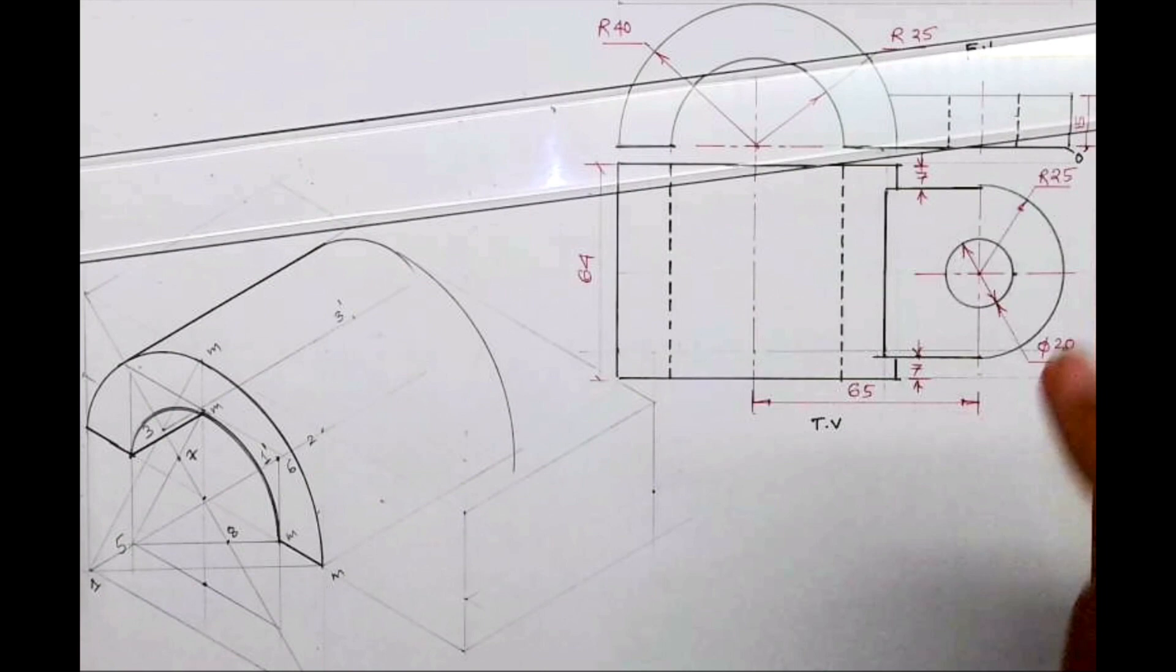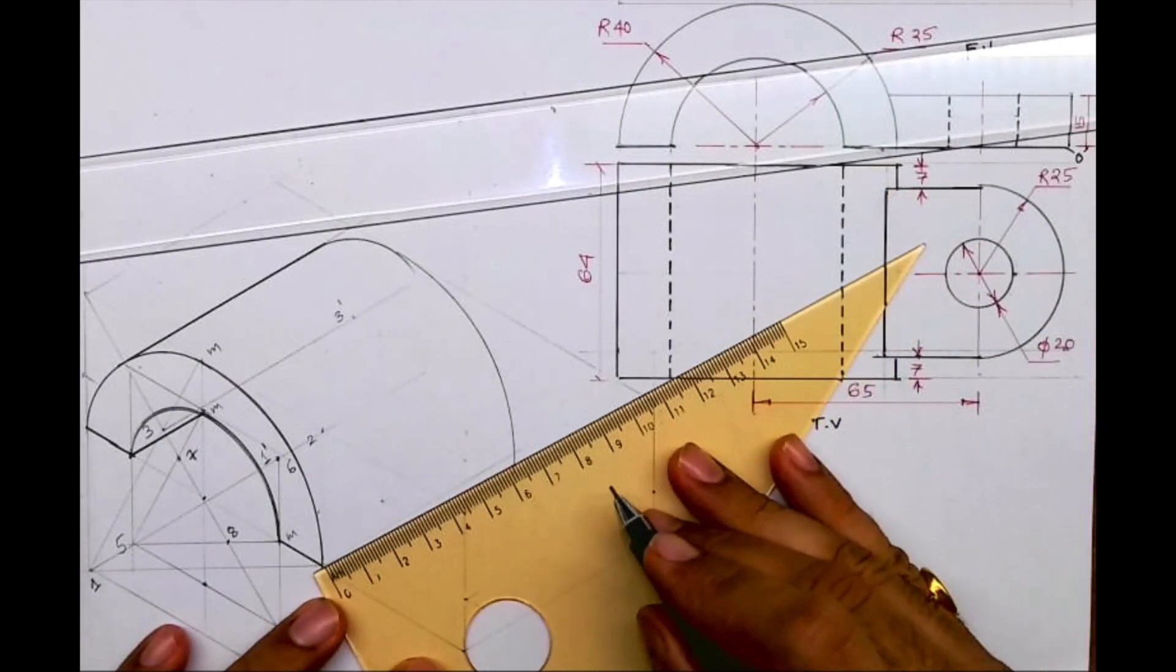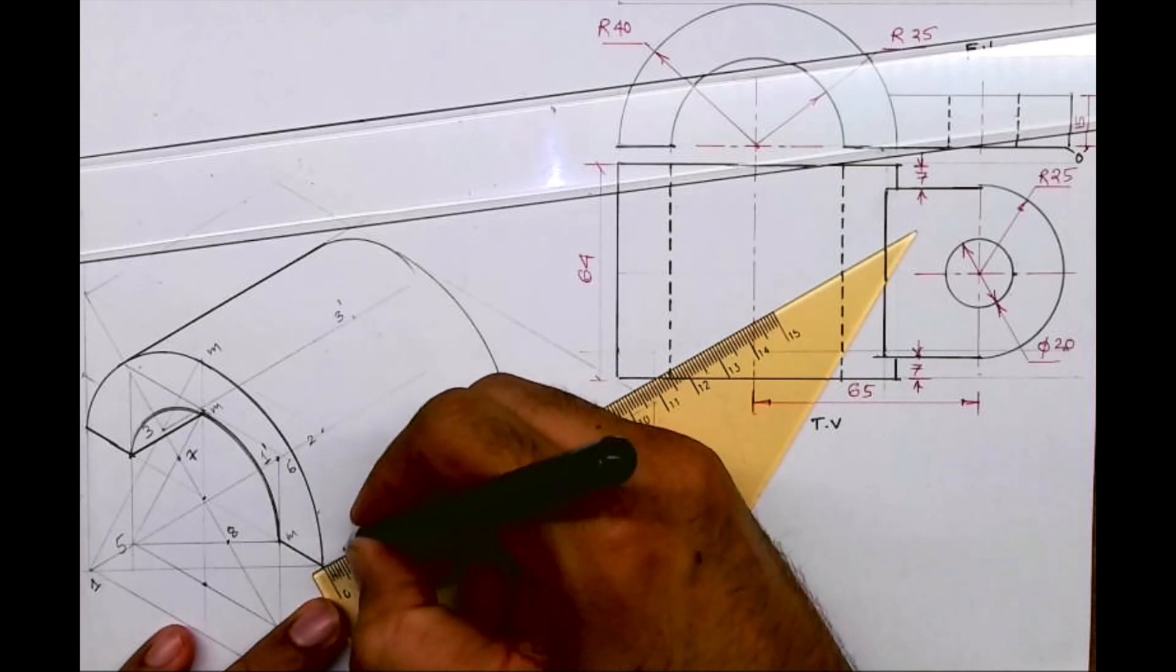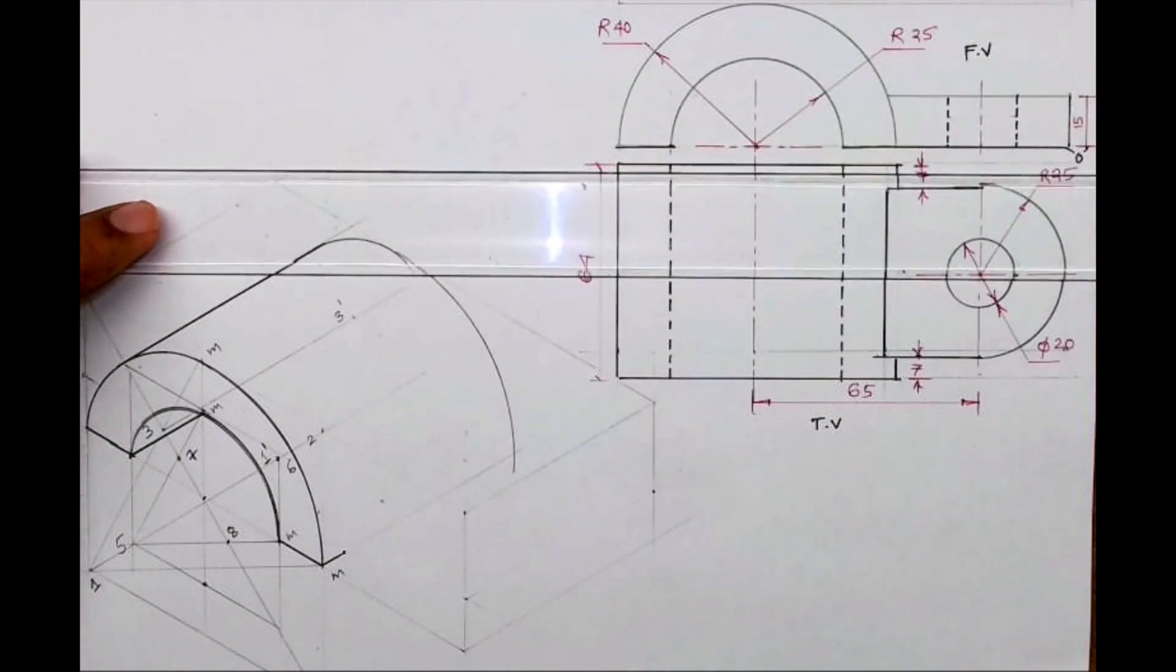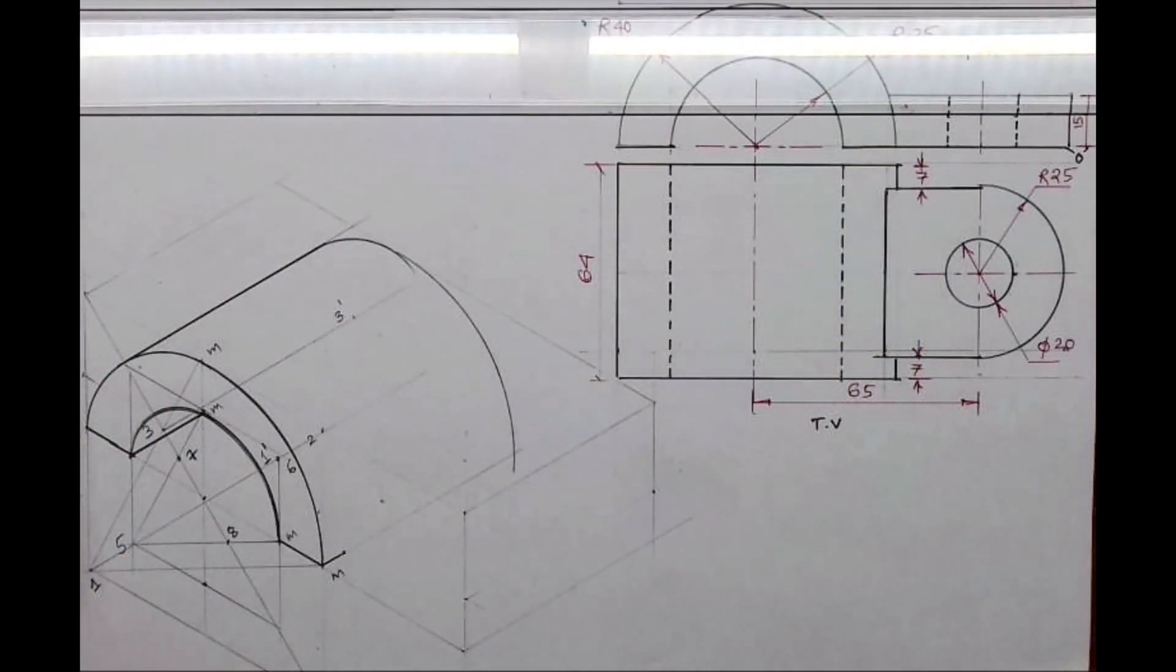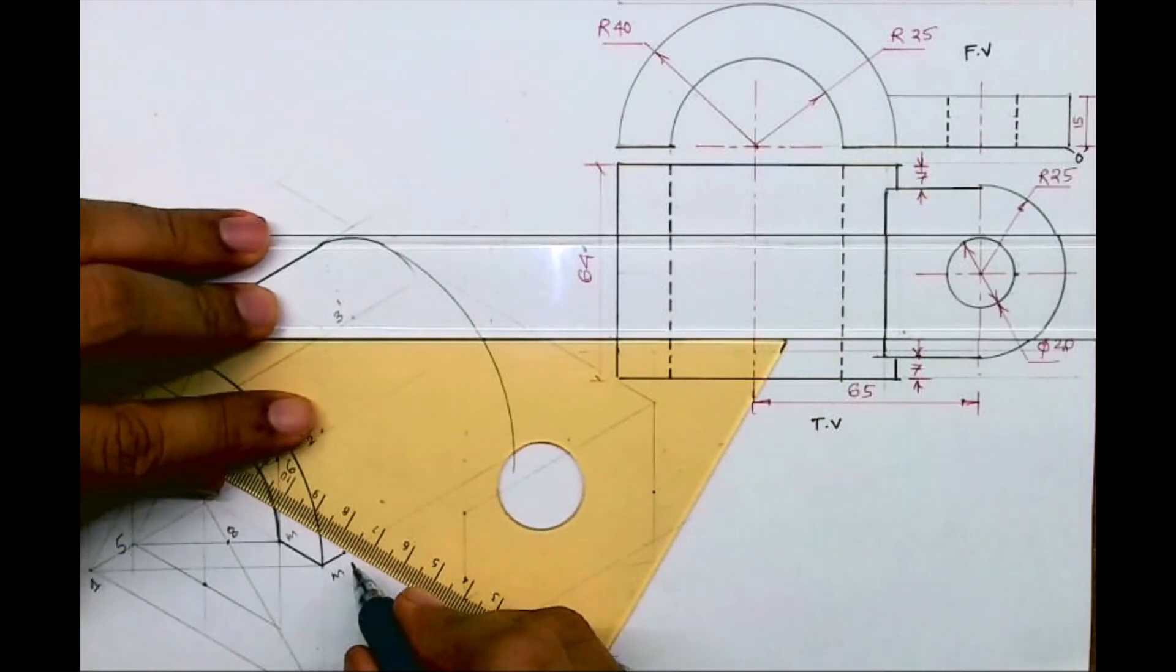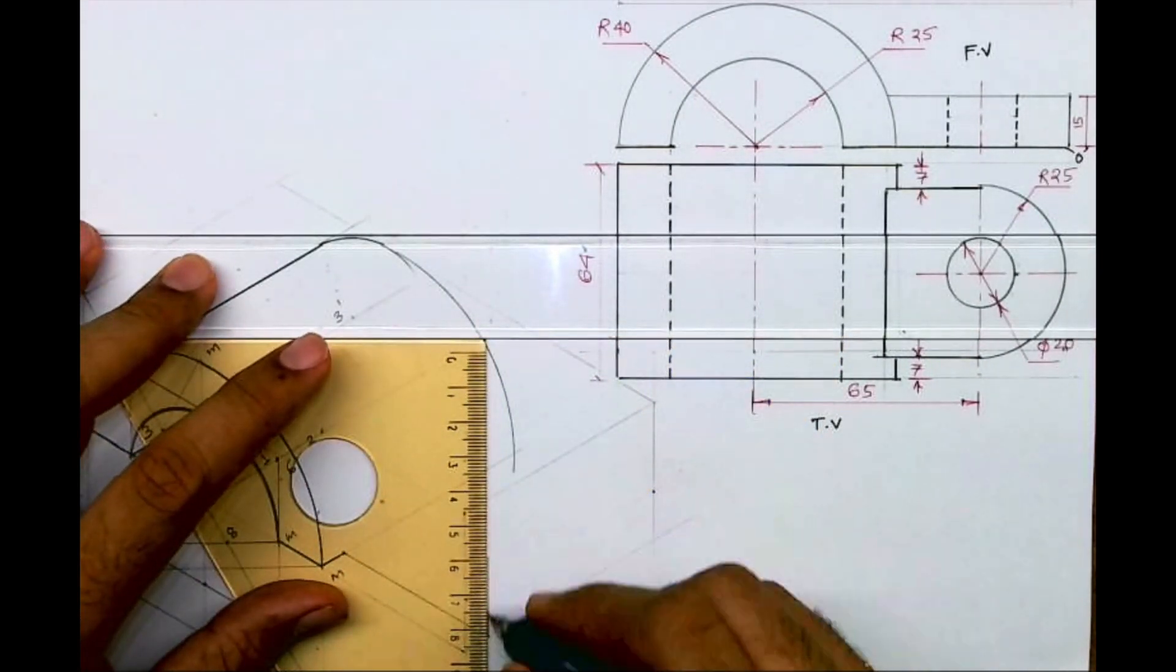Now after this we need to draw this part. If you see diameter is, radius is 25, so diameter is 50. And if you see both the sides they have given 7, 7. So we can mark that 7. So part 2 is how much inside, it is inside by 7mm. And then I will draw a line. And now from that point I will go up by 15.